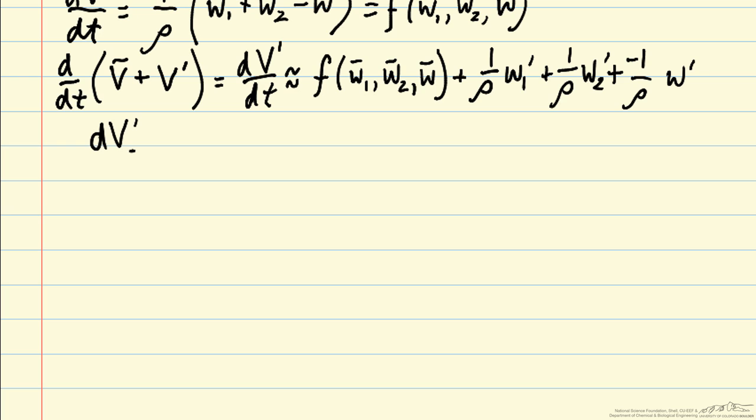So we can rewrite that as dV prime dt equals, if we evaluate f at our bar variables, that's just 1 over the density times w1 bar plus w2 bar minus w bar.